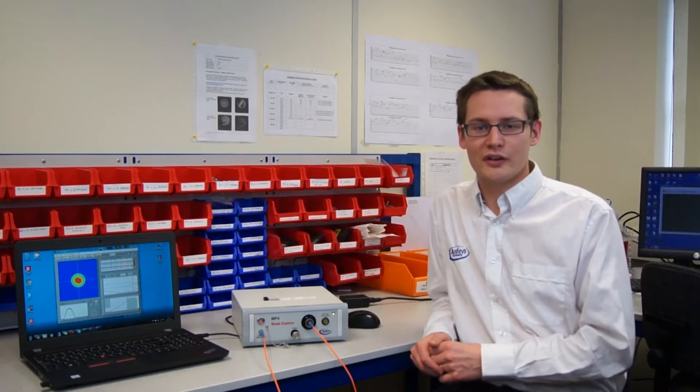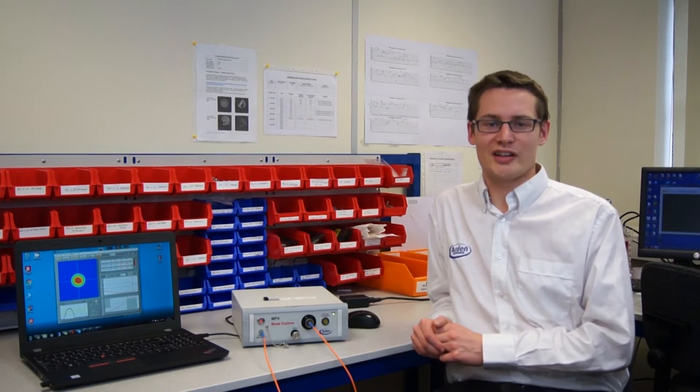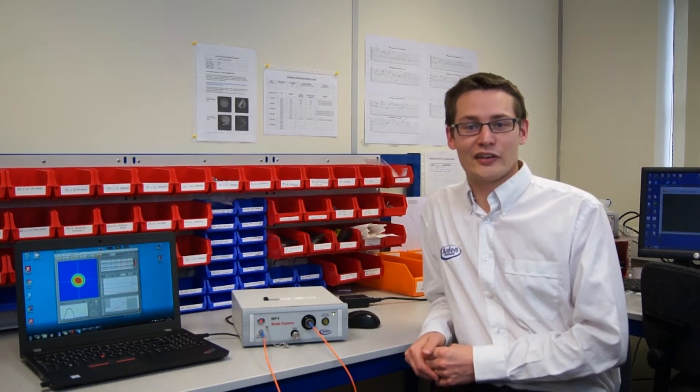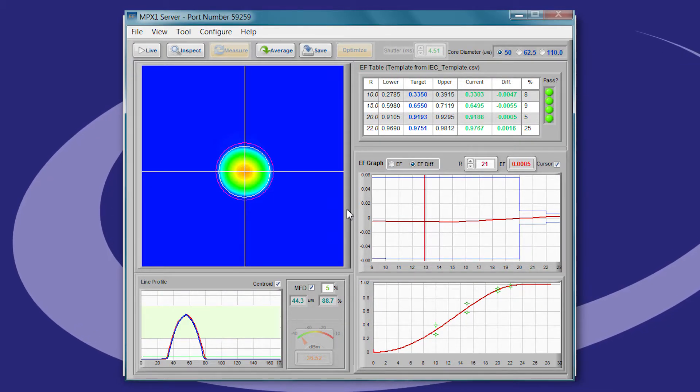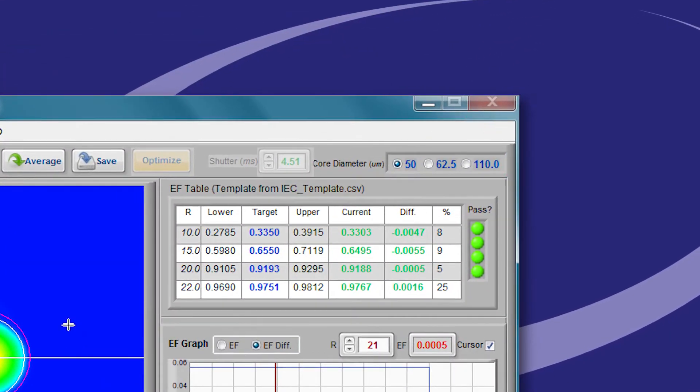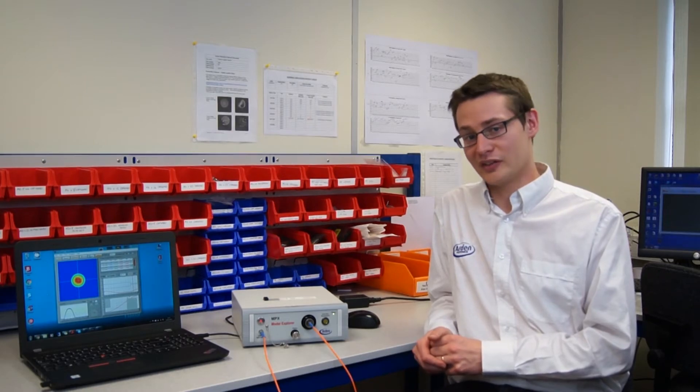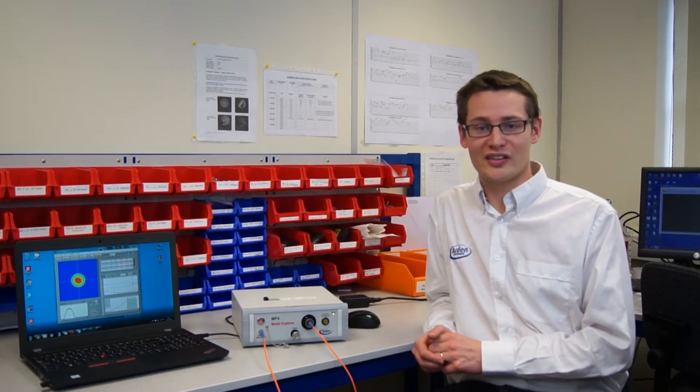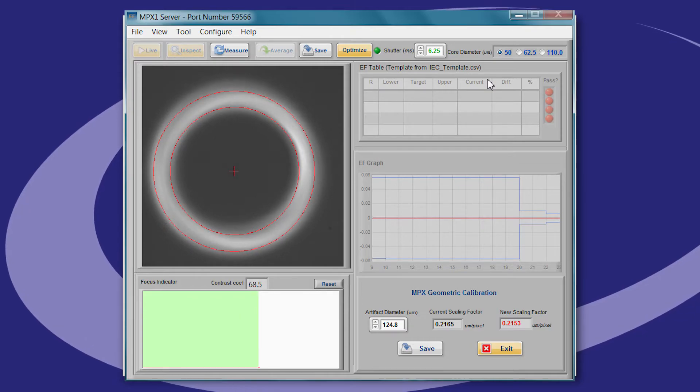The image window has also been increased in size by 16 percent. This has allowed us to increase the maximum core diameter size which can be measured up to 110 microns, and this is supported by the user definable templates. It also means that it's easier to calibrate the system using the optional calibration artifact.